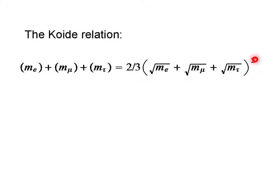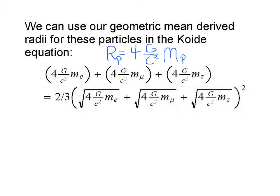We can use our geometric mean-derived radii for these particles in the Koide equation. From a few slides ago, we saw that the radius of a particle is equal to 4 times the gravitational constant times the speed of light squared times the mass of the particle. And instead of putting the mass of the electron, or mass of the muon, or mass of the tau here, we'll put the radius in these locations for each of these particular particles.